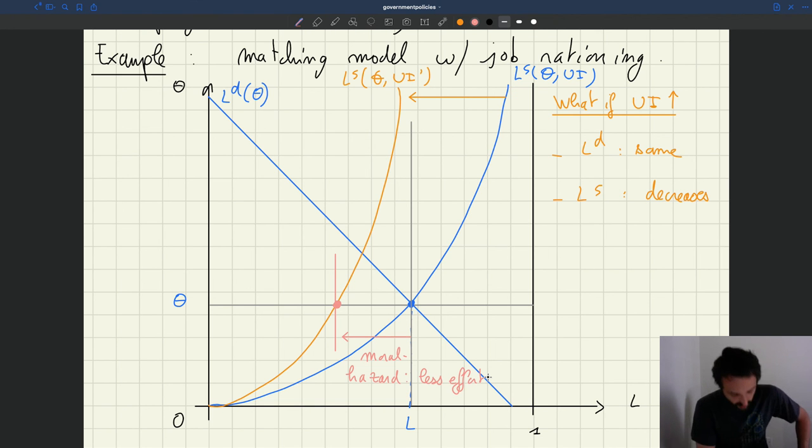And in fact, when you read about unemployment insurance, very often you will see this discussion that when you increase UI, people have less incentive to search, that's going to lead to less employment. So what people have in mind is exactly that - the moral hazard effect of UI, and the fact that when people search less, you may reduce employment.